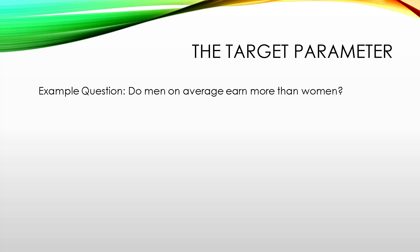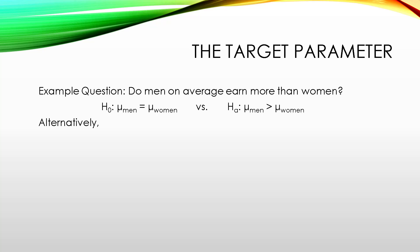So let's say we want to investigate if men earn more on average than women. Our null hypothesis would be that the mean salary for men is equal to the mean salary for women, and the alternative hypothesis would be that the average for men is more than women. We could rewrite this by subtracting the mean for women from both sides, giving us that the mean for men minus the mean for women equals zero, or is bigger than zero.